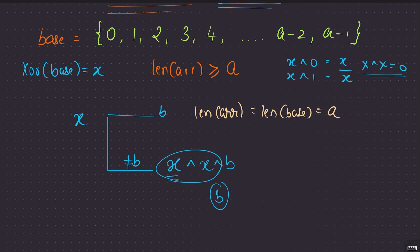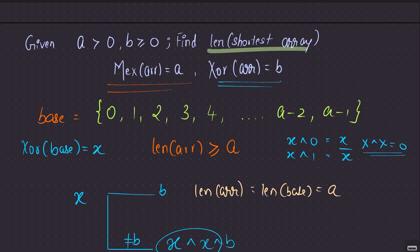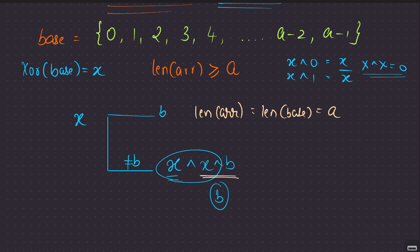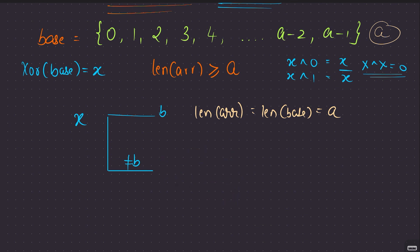This seems to be working, so your answer would be length of base plus 1, that is a plus 1. But wait — you have the MEX condition to satisfy as well. Can adding this element mess up the MEX value? It can only mess up MEX if this element equals a, because then a would be present in the array and the minimum excluded would be greater than a. So there are two sub-cases: is X XOR b equal to a, or is X XOR b not equal to a?